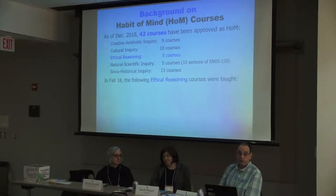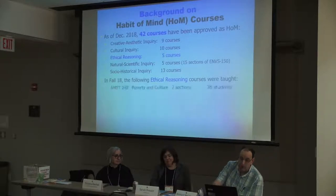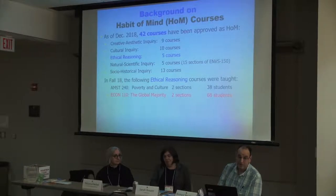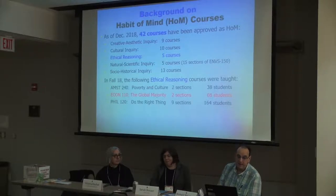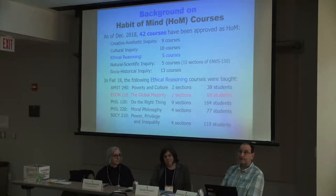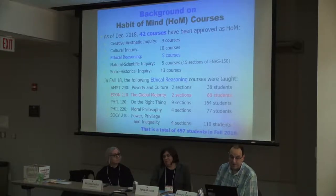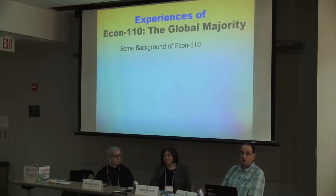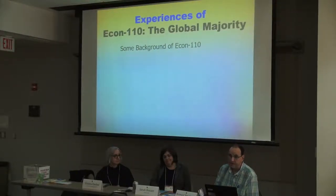In Fall 2018, the following Ethical Reasoning courses were taught: American Studies 240 (Poverty and Culture) with 2 sections and 38 students; Econ 110 for Global Majority with 2 sections and 68 students; Philosophy 120 (Do the Right Thing) with 9 sections and 164 students; Philosophy 220 (Moral Philosophy) with 4 sections and 77 students; and Sociology 210 (Power, Privilege, and Inequality) with 4 sections and 110 students — totaling 457 students in Fall 2018. We don't have enough courses for all the students who will need to take ethical reasoning.